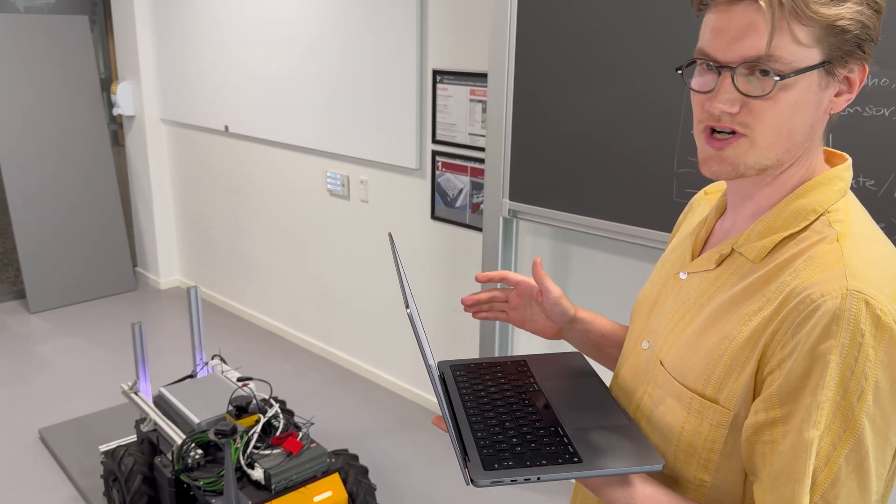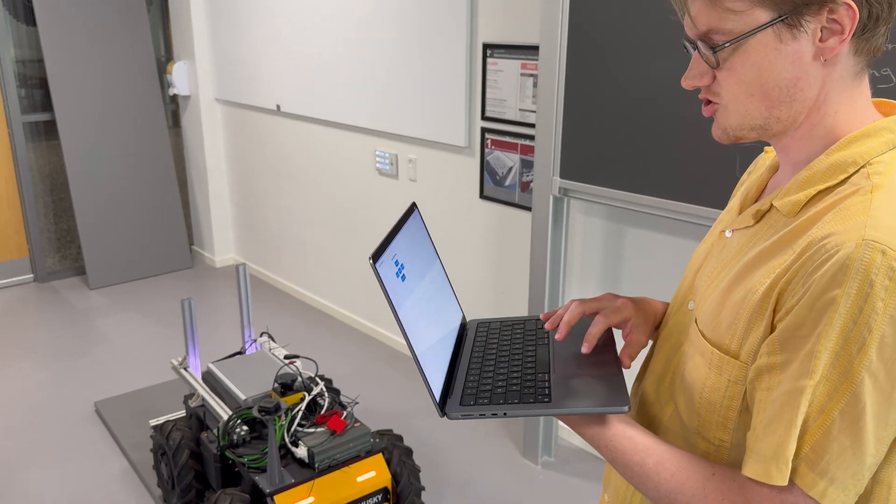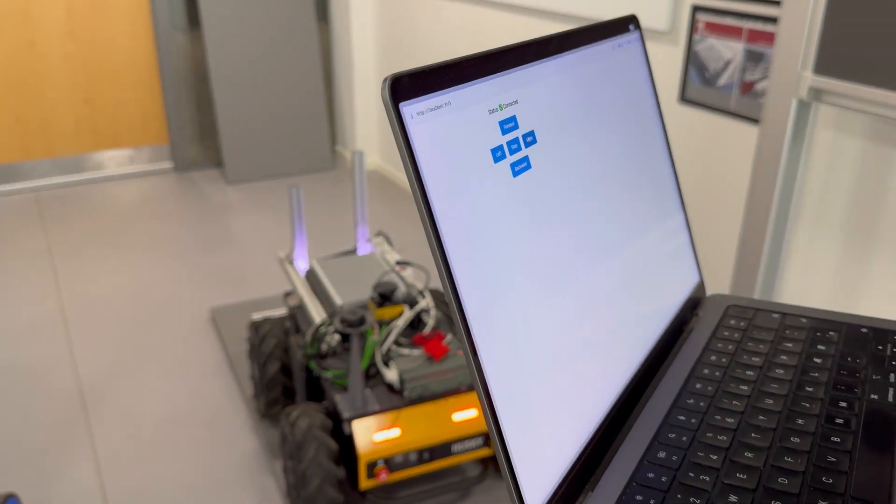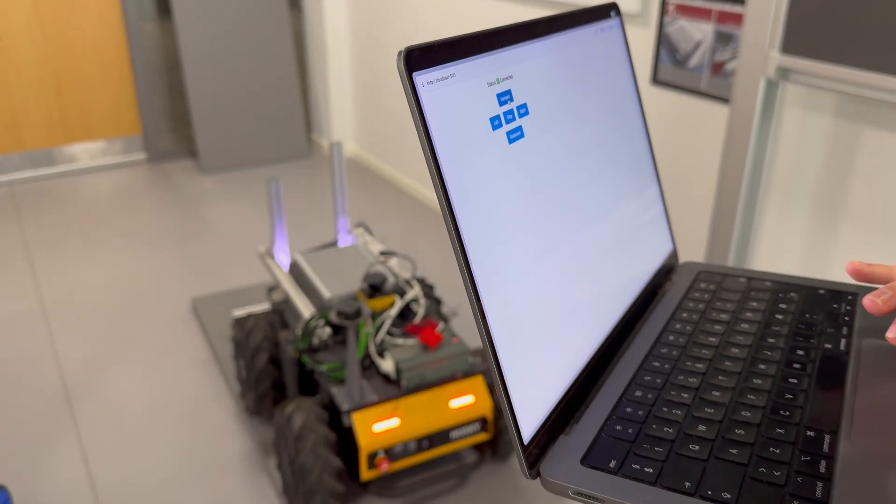Now I'd like to do a quick demonstration of the robot being remotely controlled from a laptop. We have control buttons here. We can now move the robot forward. We can turn it left and right. We can move backwards and forwards again.